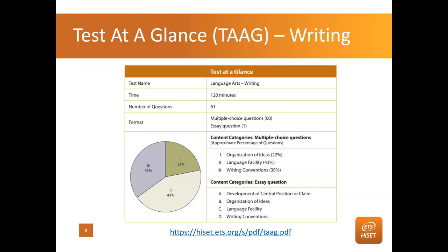One of the most important places to start with the HISET is a document called the Test at a Glance. You can Google 'HISET Test at a Glance,' and this document answers the three main questions that everyone's asking for all five subtests. It'll tell you the test content categories, how to assess — the process categories — and it tells you why it's assessed, listing the career and college readiness indicators.